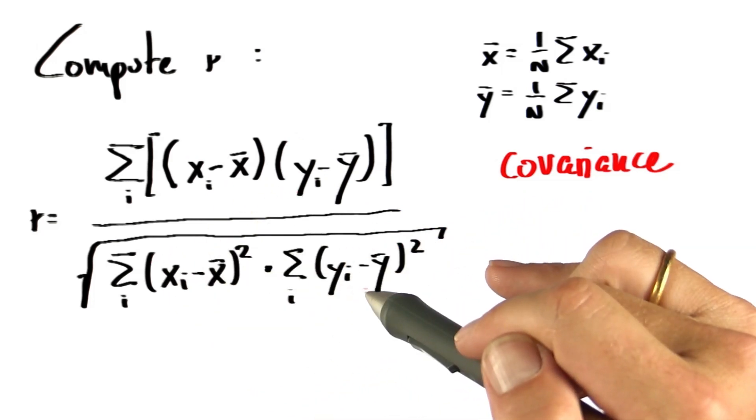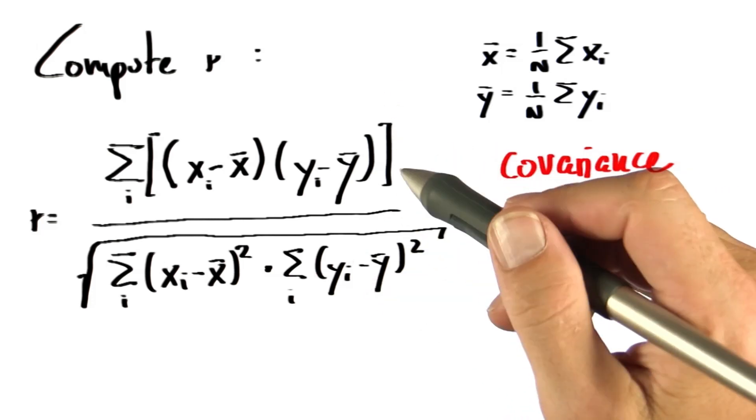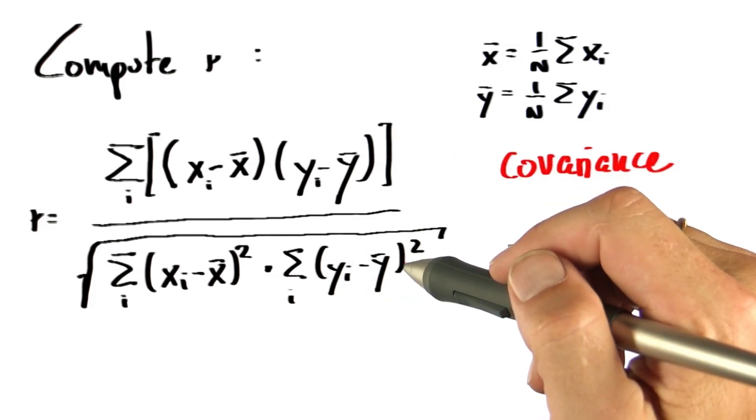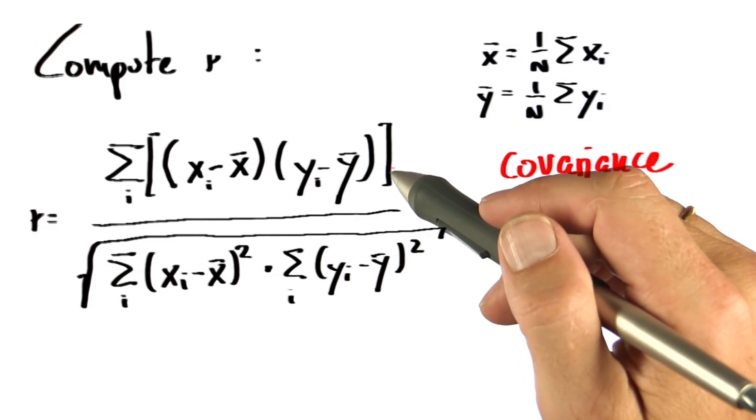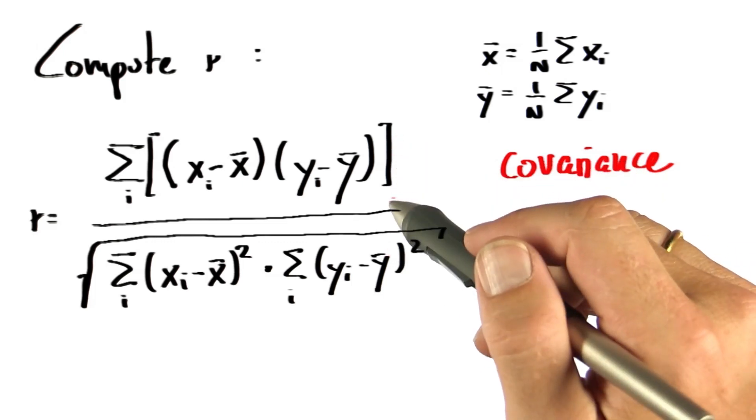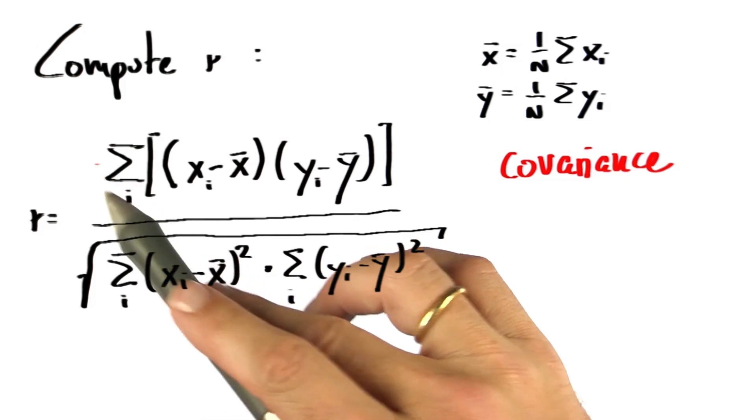So what this really tells you is kind of the ratio, how much these two things co-evolve, how much their errors correspond, versus normalized by the magnitudes of errors individually. And when that ratio becomes one, we have a perfect correlation.